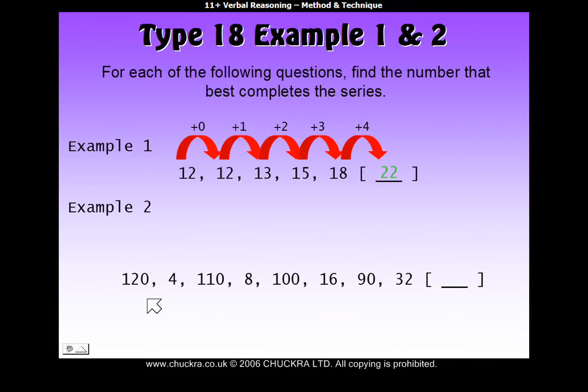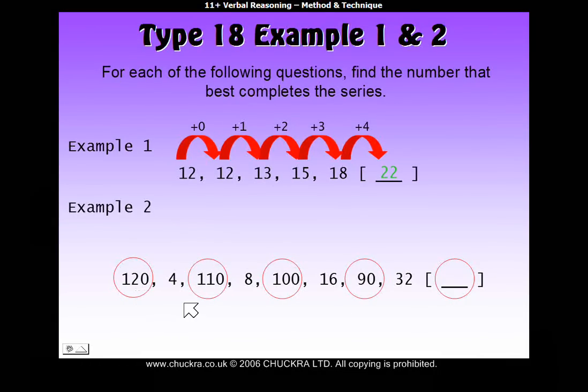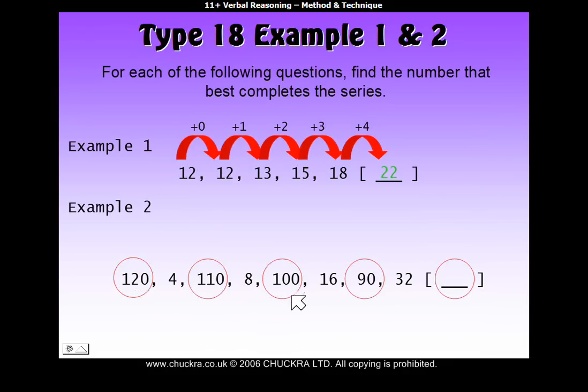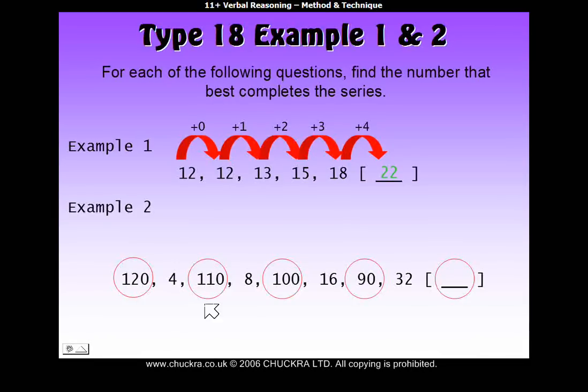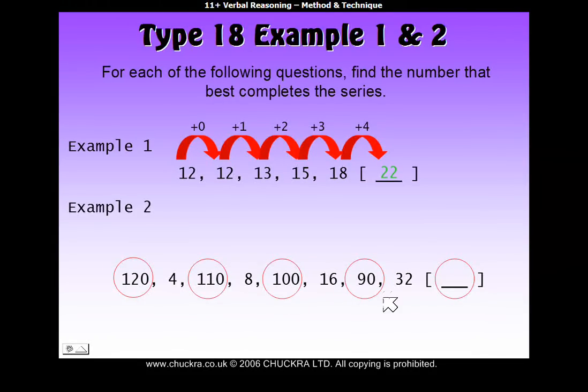And perhaps you've spotted that actually every second number makes an easy pattern. So 120 to 110 to 100 to 90, and if you continue that, you'd actually find the next number in the series. Because 4, 8, 16, and 32 make their own pattern.